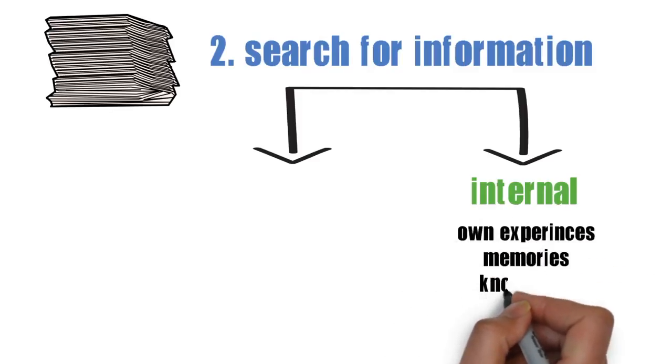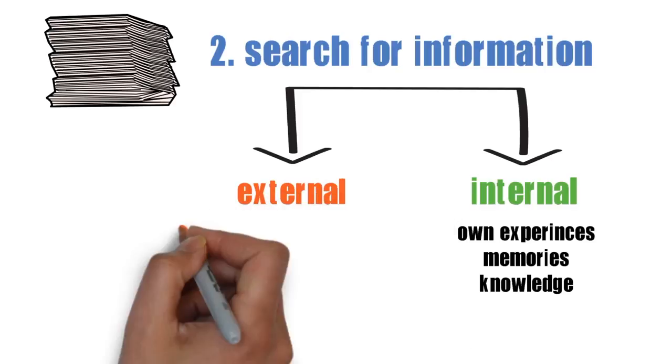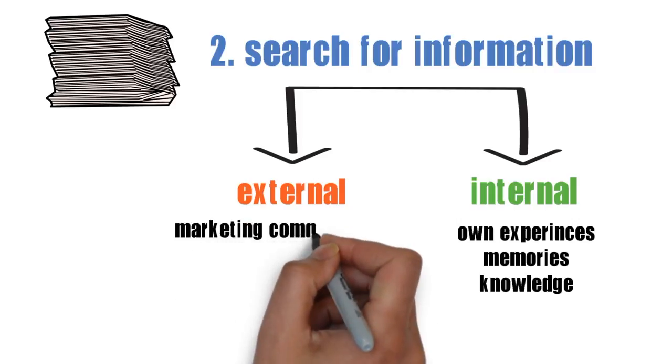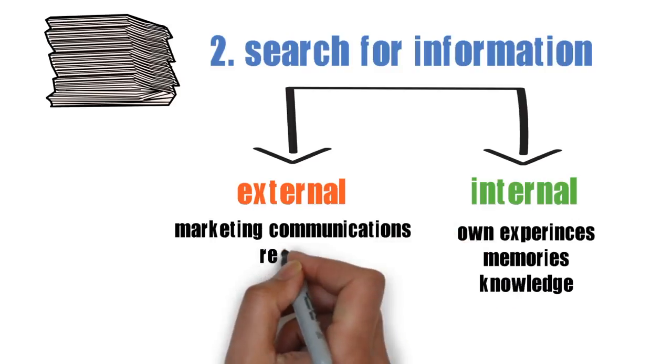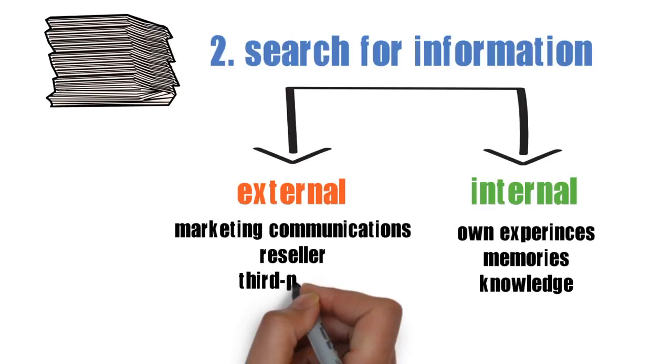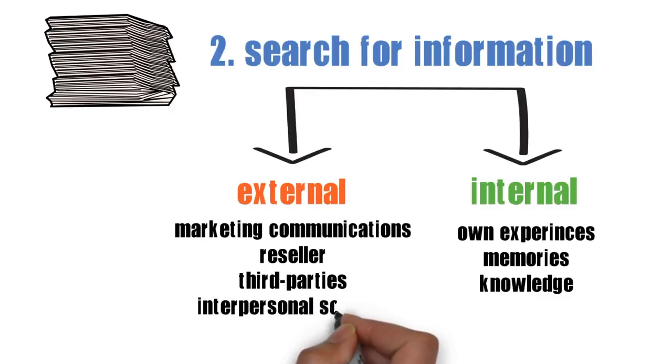In contrast, external search happens when consumers actively search for information from their environment. This could include marketer-controlled communication, reseller information, third-party independent organizations such as articles from newspapers and magazines, information from interpersonal sources such as friends and family, and information taken from direct inspection.